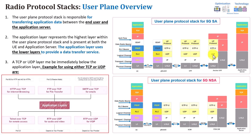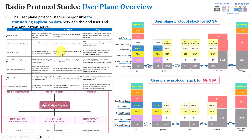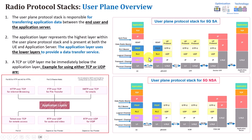GTP-U doesn't require its own mechanisms for packet loss or retransmission, because those are handled by other protocols. In general, this combination ensures fast, efficient, and session-specific data transfer within the mobile network. You can take a snapshot of this summary table, which outlines each of the layers — application, TCP, IP, and GTP-U — and why each is used.